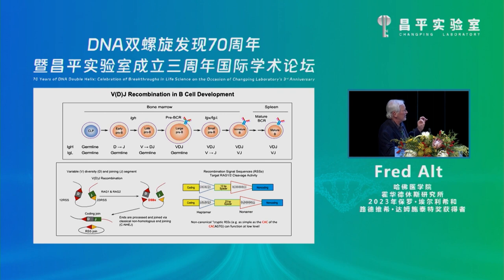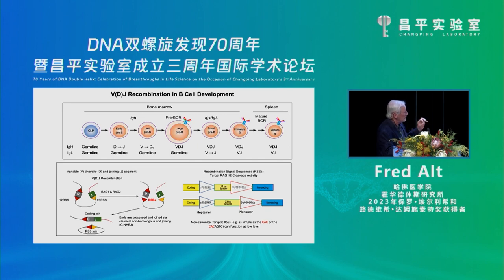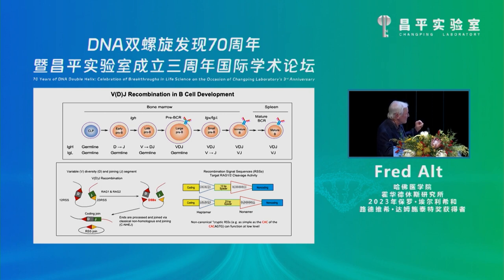These recombination signal sequences are fairly generic. They start with a heptamer, C-A-C-A-G-T-G, flanked by a non-conserved spacer of 12 or 23 base pairs, and then an AT-rich nonamer. These recombination signal sequences can only work in pairs to target an enzyme that cleaves the VDJ segments — they have to be 12 and 23 base pair matched. The RAG1-2 endonuclease, discovered by David Baltimore, cleaves precisely between the CAC of the heptamer and the flanking coding sequence.